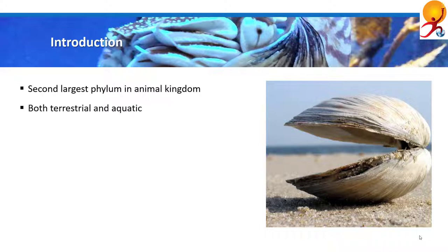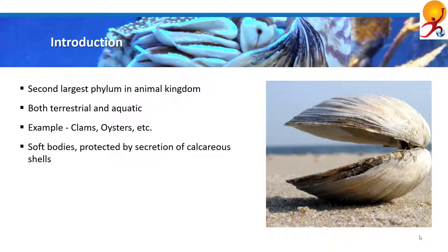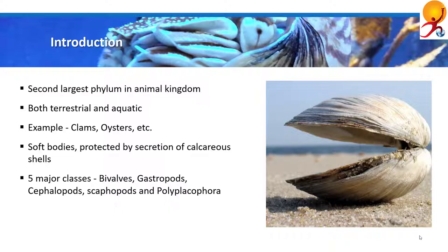Mollusca members are terrestrial or aquatic — both marine and freshwater. They include snails, octopuses, squids, oysters, etc. The word 'mollusca' means soft things, and molluscs have soft bodies, which explains the name of the phylum. Since their body is soft, they are fragile and find it difficult to support their body in terrestrial environments. Many molluscs solve this problem by secreting a calcareous shell which functions as an exoskeleton and prevents dehydration.